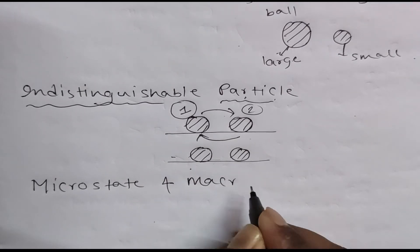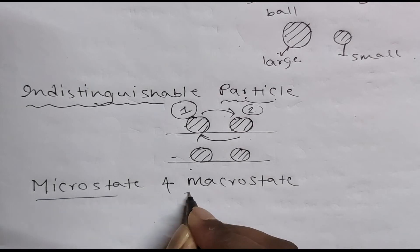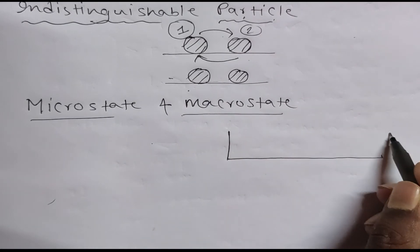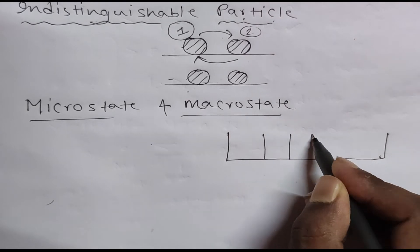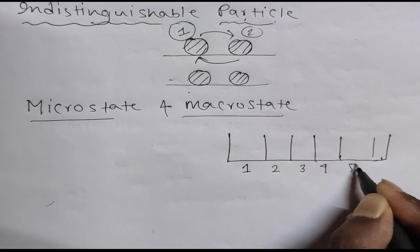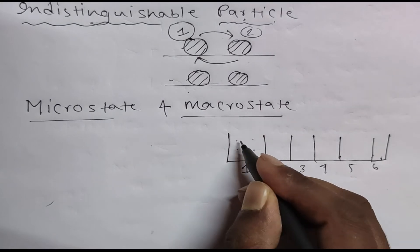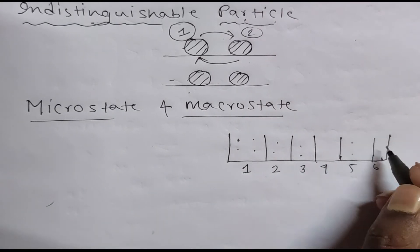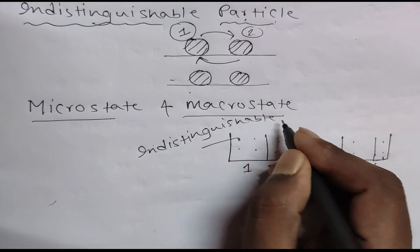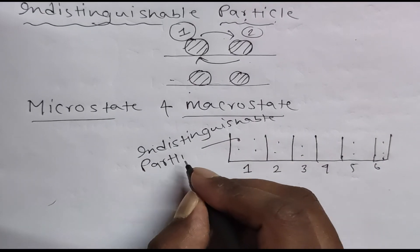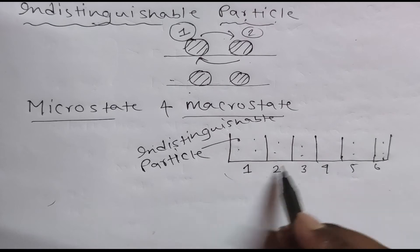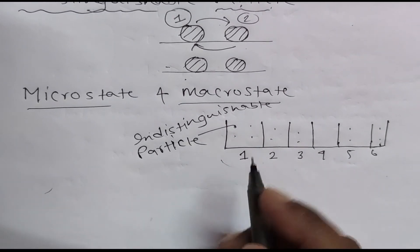So what is microstate and macrostate? Suppose here is a big box divided into some small boxes — box one, two, three, four, five, six. These are indistinguishable particles. All these particles are indistinguishable, so we cannot define the difference between them.